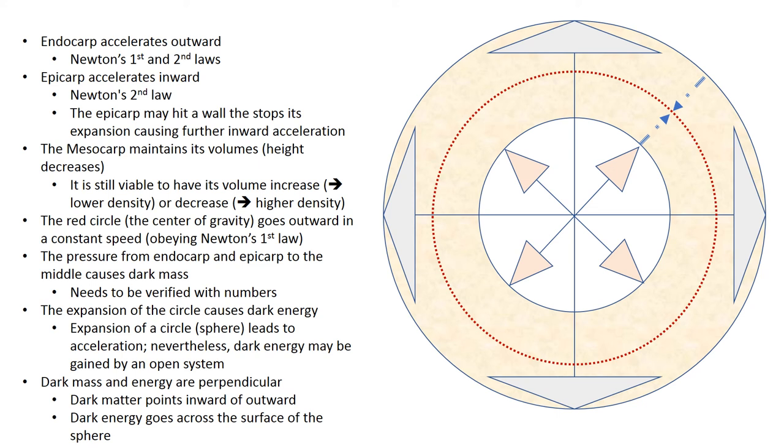In this graph we can see that dark matter and dark energy are perpendicular to each other where dark matter is actually going toward the center of the universe meanwhile dark energy goes across the surface of the universe of the sphere.